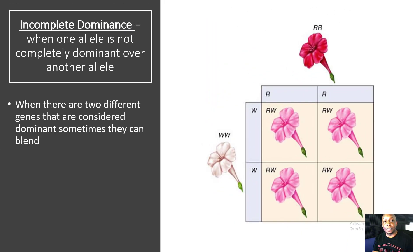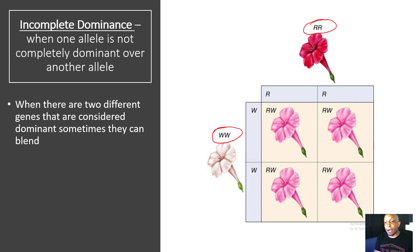Let's take a look at incomplete dominance. This is when one allele is not completely dominant over another allele, and when there are two different genes that are considered dominant, sometimes they can blend. So when we cross a homozygous dominant red flower with a homozygous dominant white flower, the resulting offspring are neither red nor white — they're actually a blend. So we have pink flowers that have been produced. Neither allele was dominant over the other; they blended together to create these pink flowers.